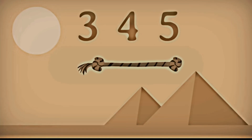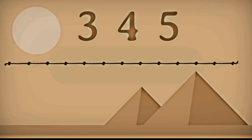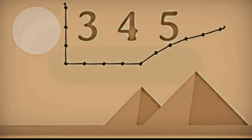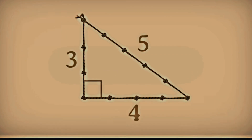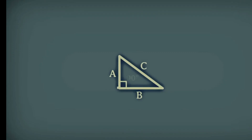The theory is that surveyors can stretch a knotted rope with 12 equal segments to form a triangle with sides of length 3, 4, and 5. According to the converse of the Pythagorean theorem, that has to make a right triangle, and therefore a square corner.